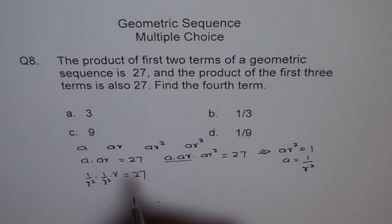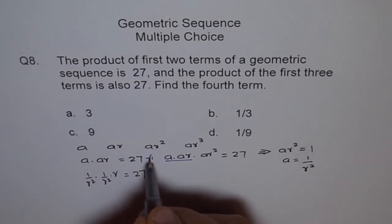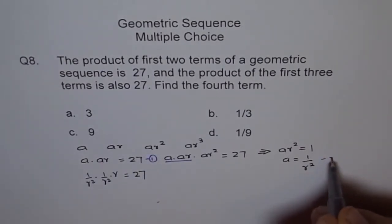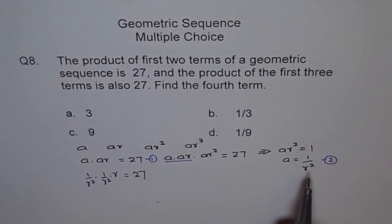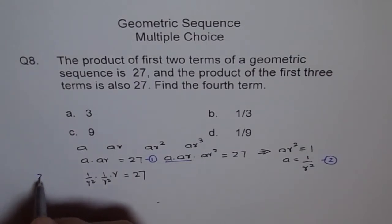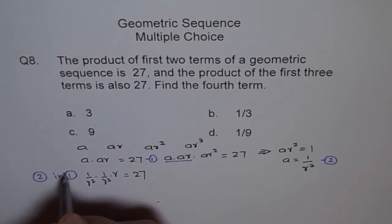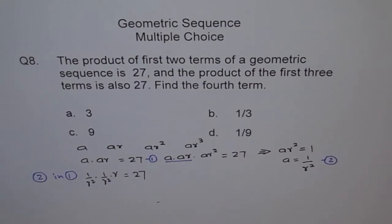So this was the starting equation. This is equation 1 for us, and we found this relation 2. Now we'll use 2 in 1. We are putting 2 in 1, and we got 1 over r squared, 1 over r squared for a's and r equals 27.